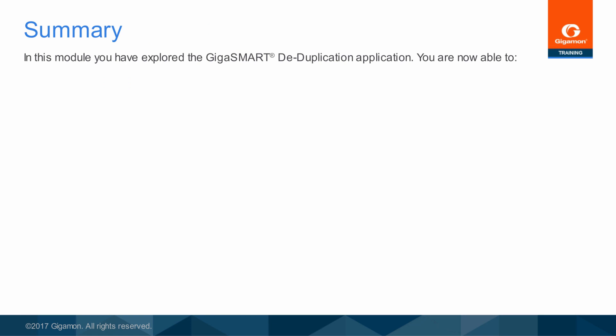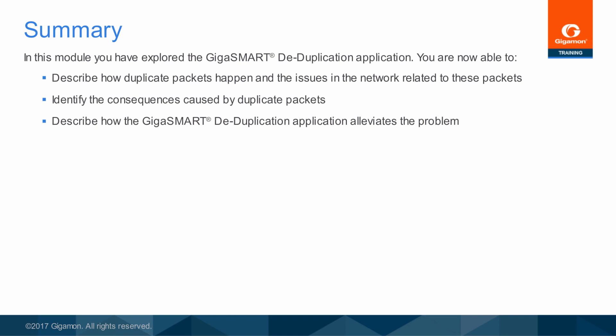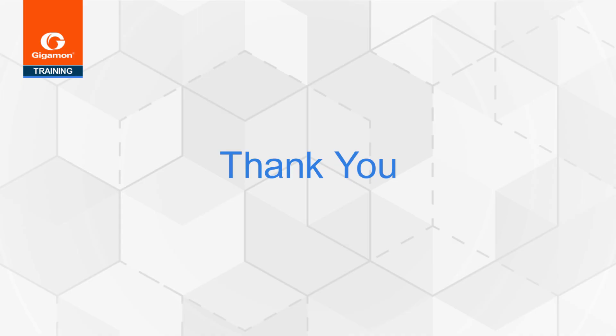In this module, you have explored the GigaSmart deduplication application. You are now able to: describe how duplicate packets happen and the issues in the network related to these packets; identify the consequences caused by duplicate packets; describe how the GigaSmart deduplication application alleviates the problem; and identify the use cases for the GigaSmart deduplication application. This concludes the GigaSmart training module for packet deduplication. Thank you.